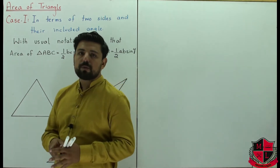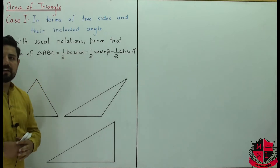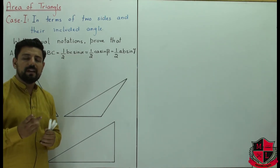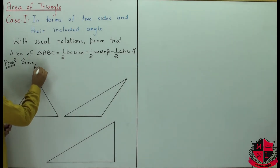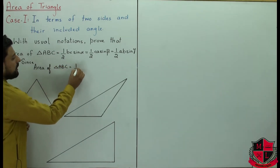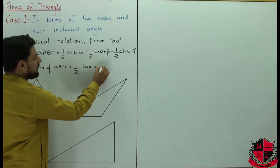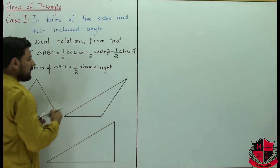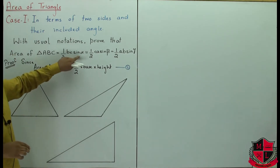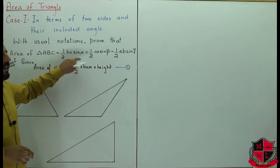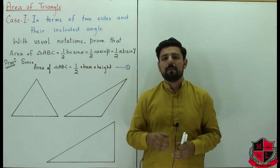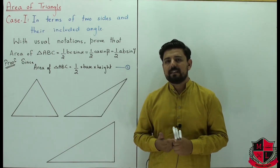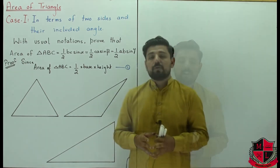Before solving questions, we will prove the formula. I am going to prove the first one: half BC times sin α. We start from the basic formula — the area of triangle ABC equals half base times altitude (height of the triangle). I am given sides B and C and angle α. For angle α there are different cases: first, if angle α is less than 90 degrees; second, if α is greater than 90 degrees; and third, if α is equal to 90 degrees.